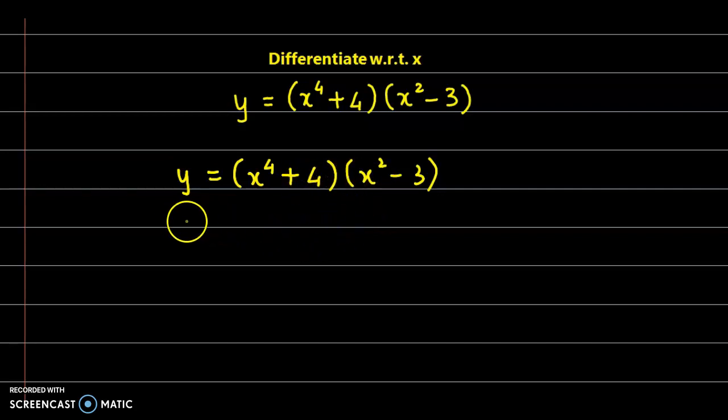Let us multiply these two brackets. So we have y equals, now multiplying by x raised to 4: x raised to 4 into x square is x raised to 6, right? 4 plus 2 that gives us 6. x raised to 4 into minus 3, so that's minus 3 times x raised to 4. Next we multiply by 4, so 4 times x square, so we have plus 4x square, and 4 into minus 3 that's minus 12.